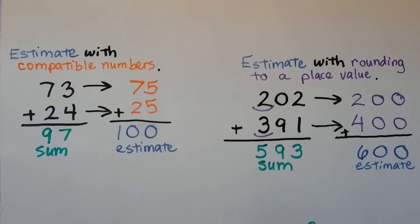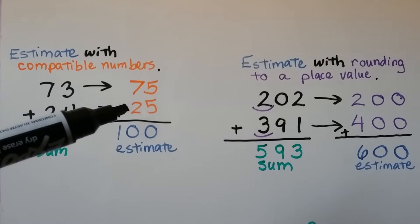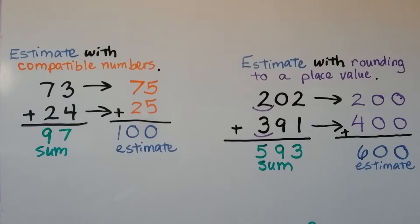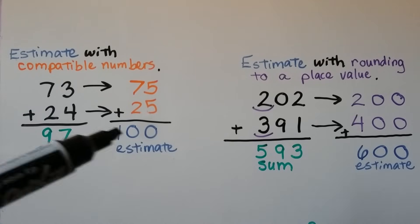We can estimate with compatible numbers. We can make this 73 a 75. We can make this 24 a 25. That's close. We can add the 75 and 25 and get 100 for our estimate. The actual sum is 97. That's about 100.